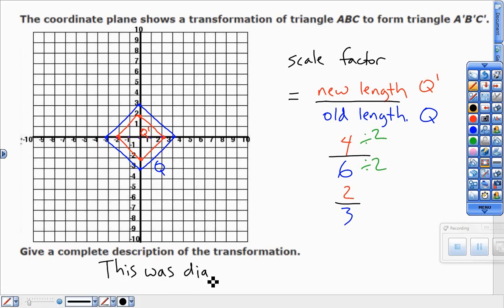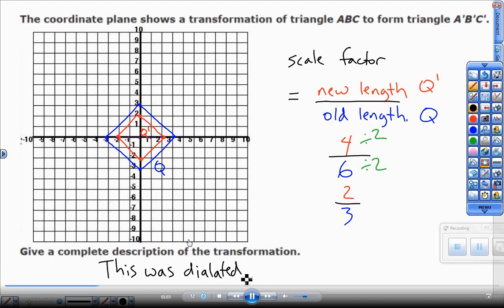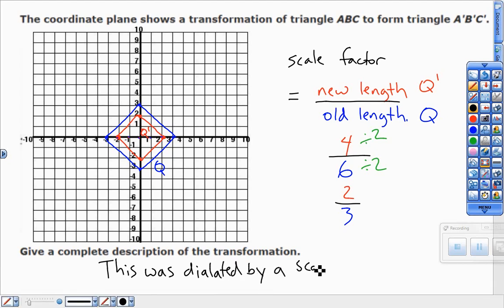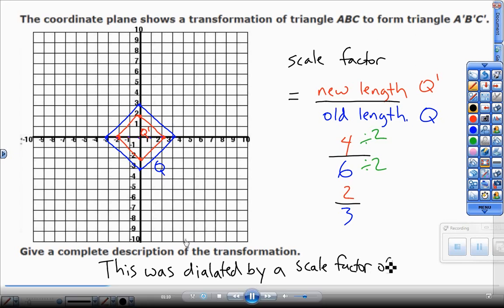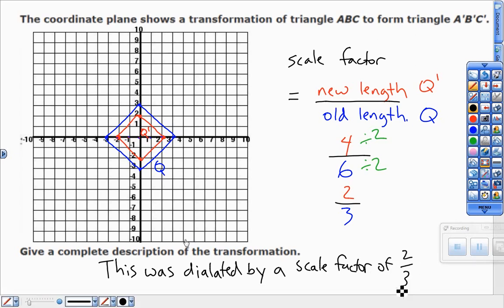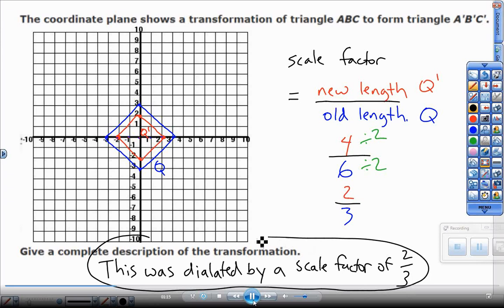So to get full credit, you need to say this was dilated by a scale factor of two-thirds. Make sure you write all that. Just don't write the scale factor, tell me it was dilated by a scale factor of two-thirds.